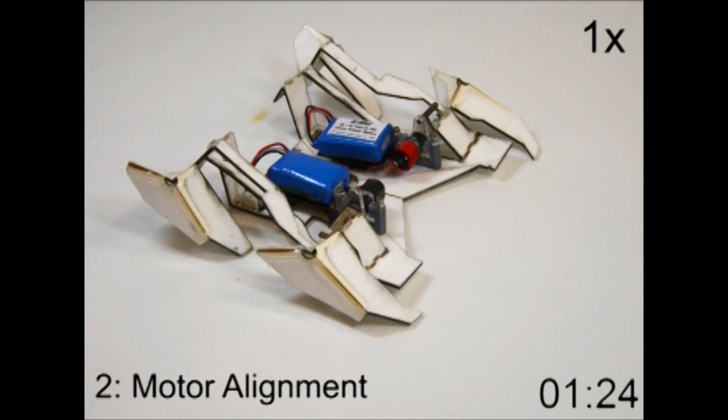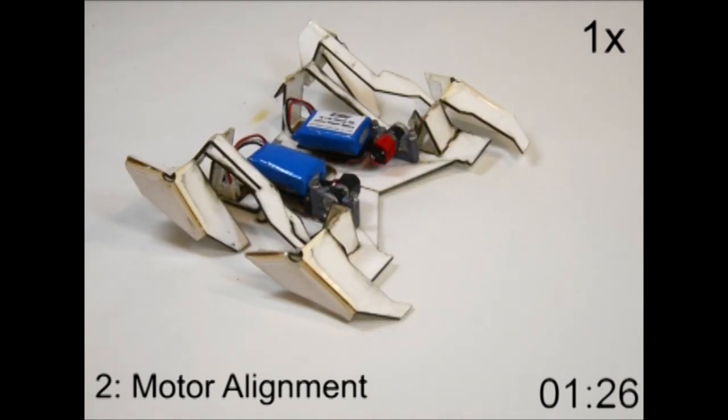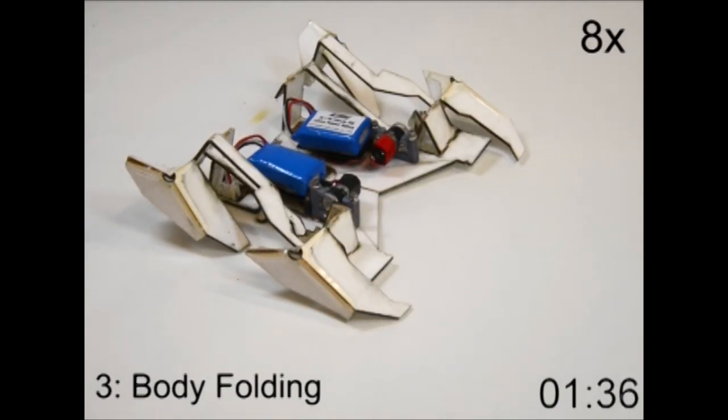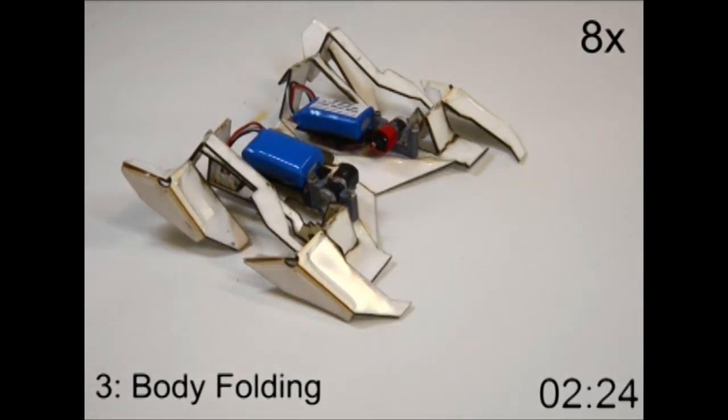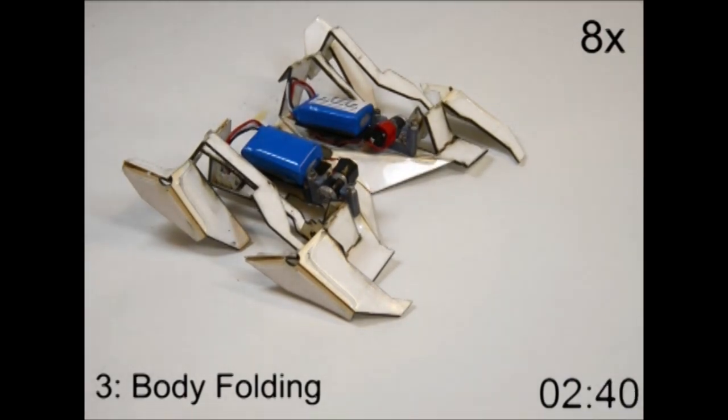In the experiment, the researchers' robot self-assembled from flat sheets of paper and shape memory polymers, which change shape when heated above 100 degrees Celsius, into which they embedded electronics.